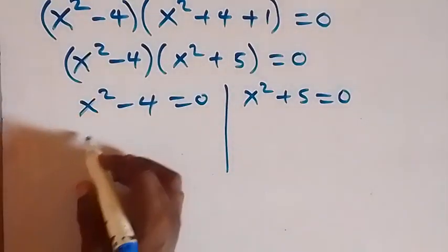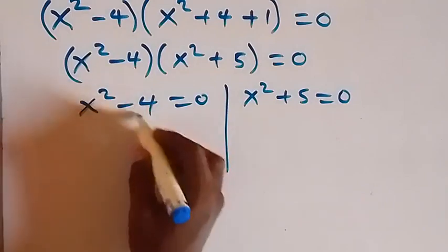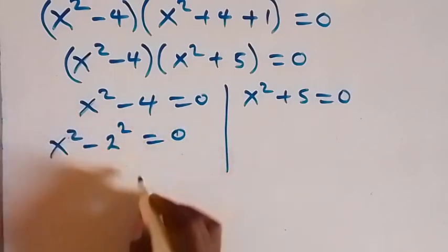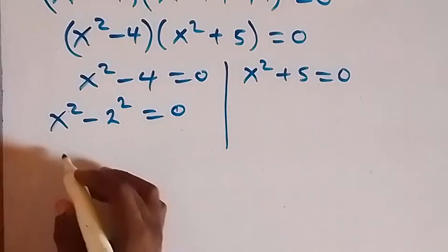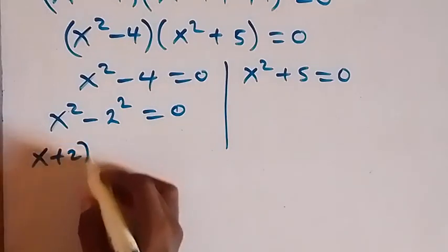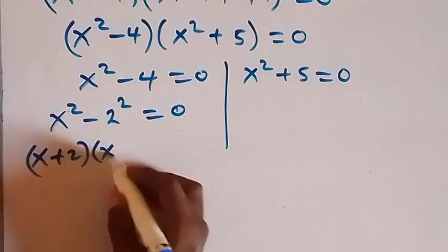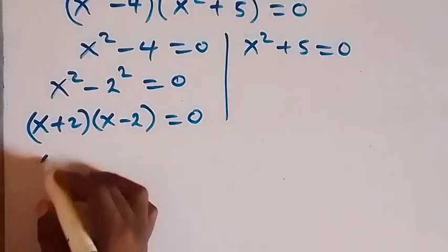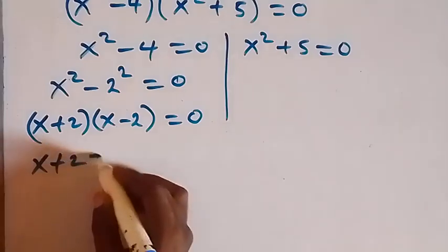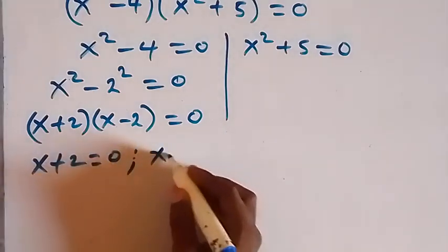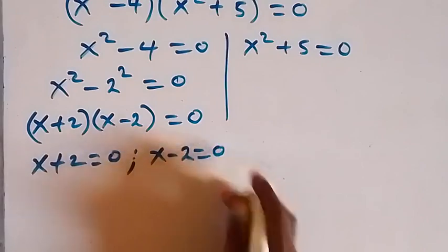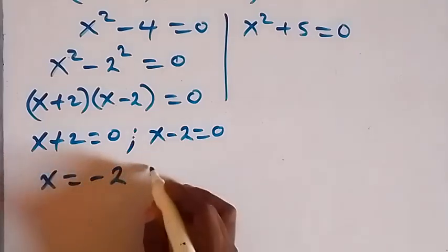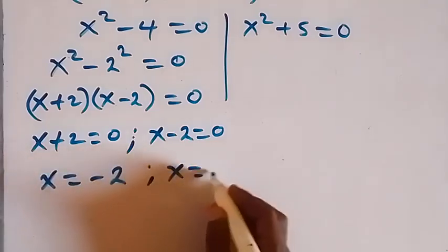From the factor x square minus 4, we can write this as x square minus 2 squared equals to 0. Again, applying the difference of two squares gives x plus 2 times x minus 2 equals to 0. So we have x plus 2 equals to 0, or x minus 2 equals to 0, giving us x equals to negative 2 and x equals to 2.